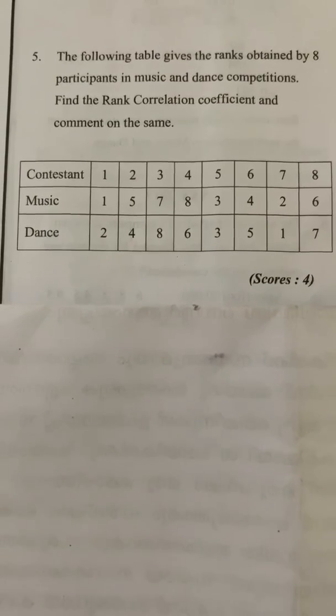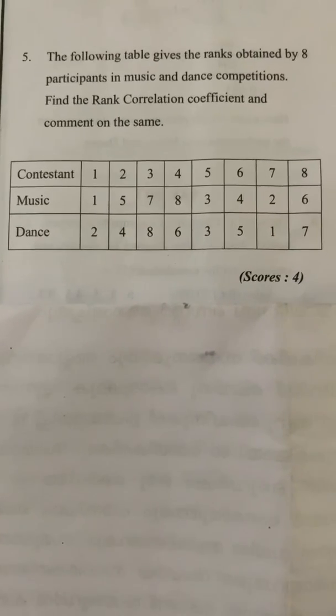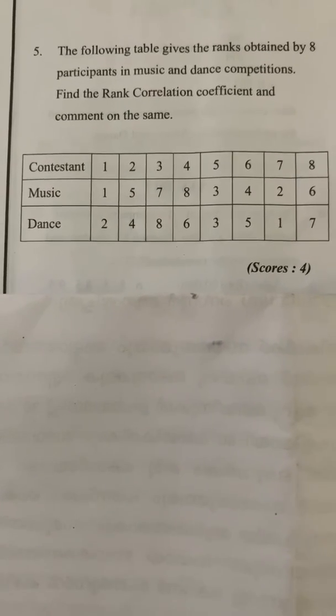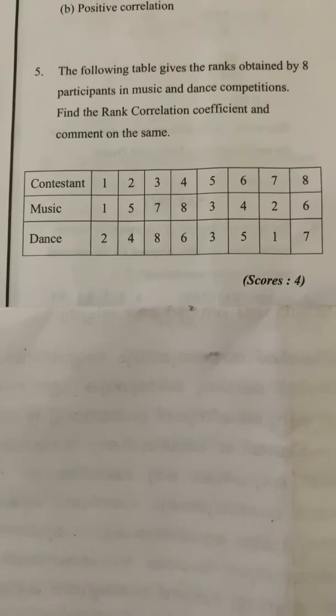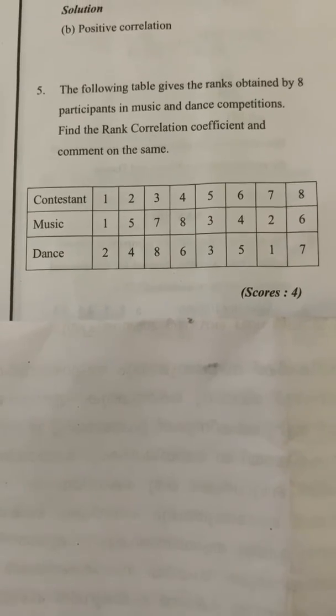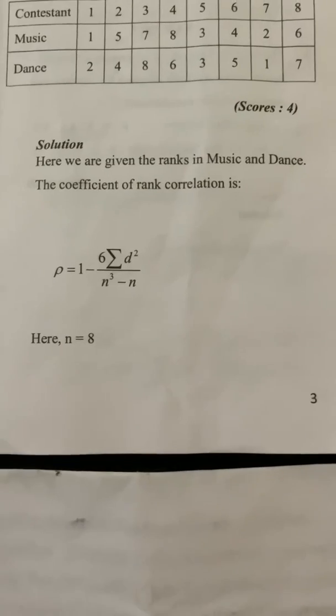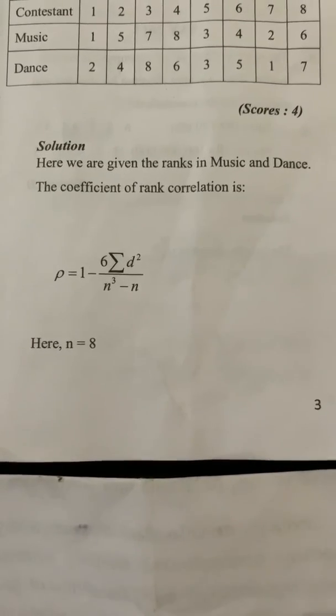The following table gives the ranks obtained by 8 participants in a music and dance competition. We have to use this table to find D, the difference of ranks. We will arrange the values and apply the formula: 1 minus 6 times sigma d-squared divided by n-cubed minus n.